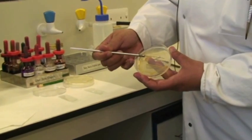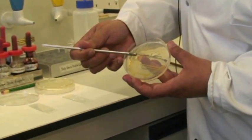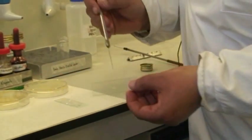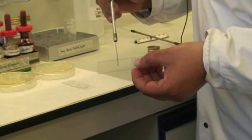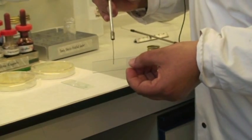Just choosing one nice isolated colony there, and emulsifying that on the surface of your slide, and leaving it to air dry.